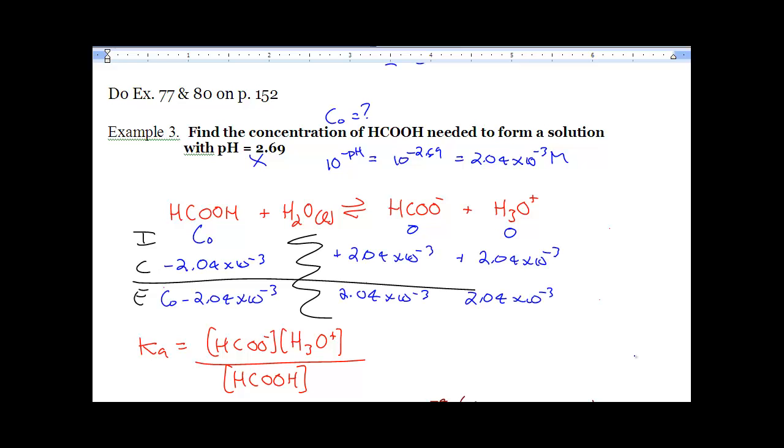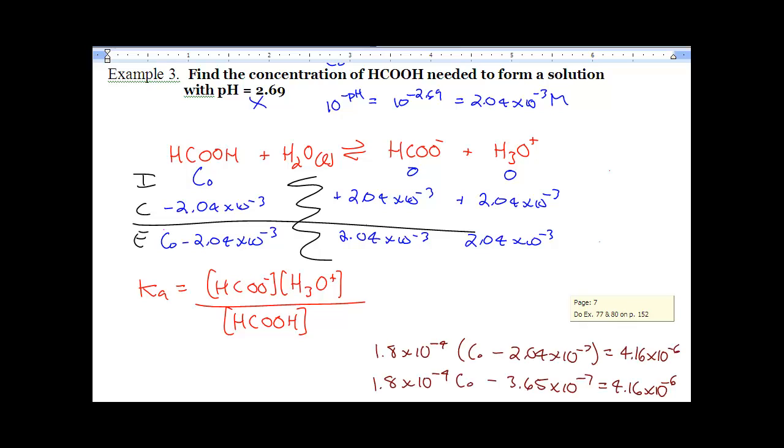So I did all that. Now we're plugging it into our Ka expression. Our Ka expression which is what we need to know is going to be 1.8 times 10 to the negative 4 equals 2.04 times 10 to the negative 3 squared. There's our X squared divided by C0 minus X.